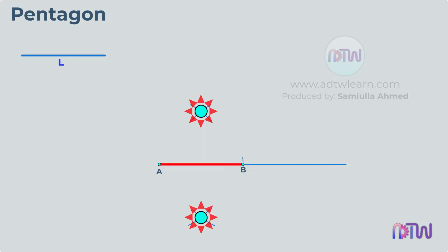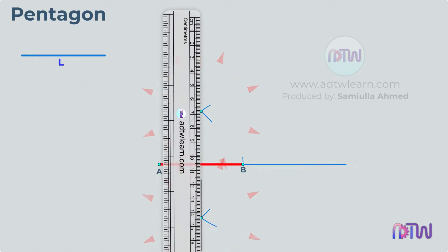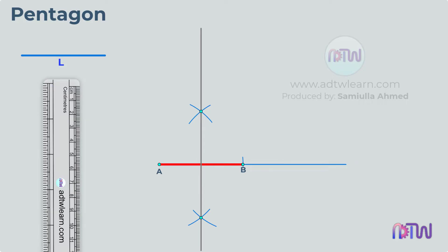Draw a line passing through these points. This line is perpendicular to line AB and passes through its center. Mark this point as M.